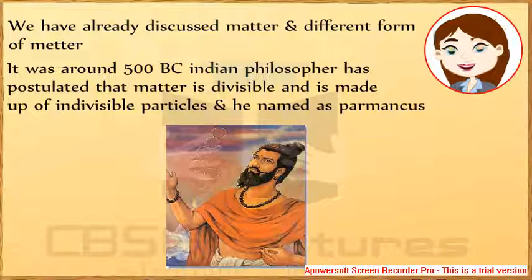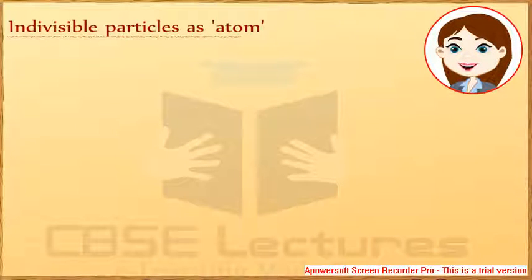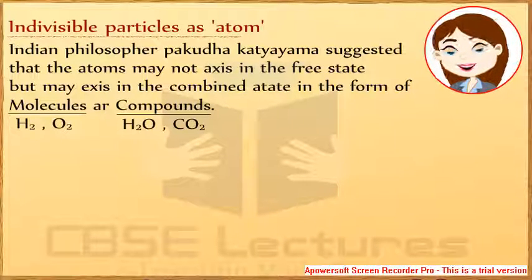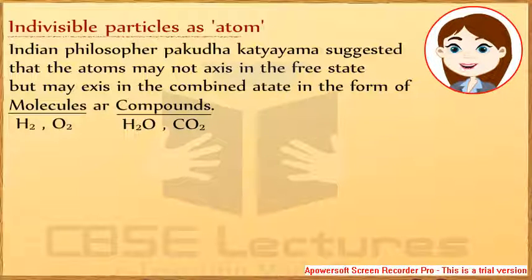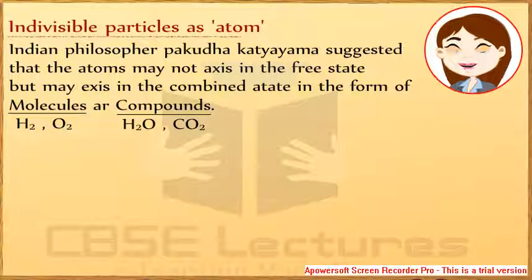Democritus and Leucippus called the smallest indivisible particle as atom. Indian philosopher Pakuda and Kacchayana suggested that atoms may not exist in the free state but may exist in the combined state in the form of molecules or compounds — S2O2, S2O, CO2.